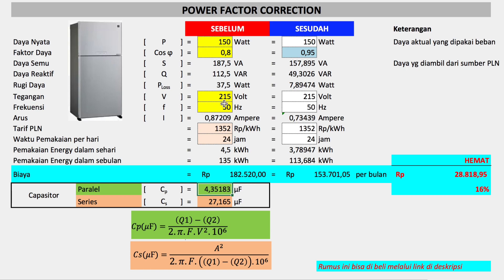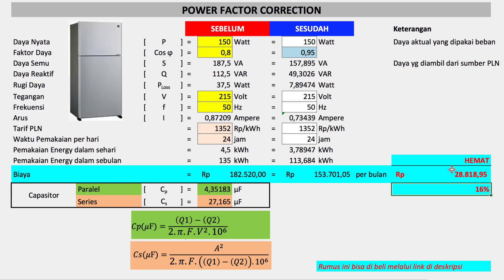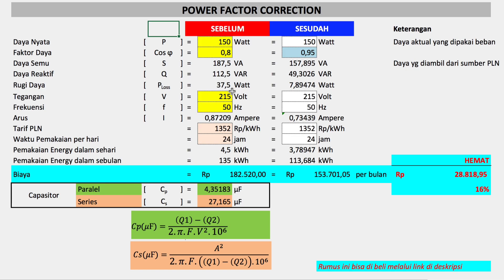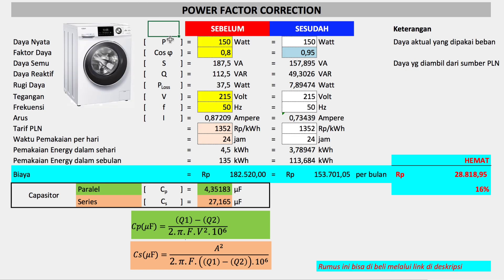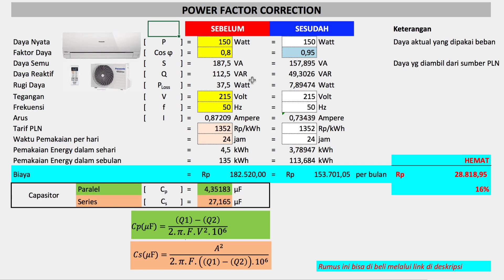Ketika kulkas ini sudah ditambahkan 4 mikrofarad, maka akan kita dapatkan perhitungan biaya kelistrikannya, penghematannya sebesar 28 ribu dalam sebulan, atau sebesar 16%. Ini hanya untuk satu alat saja, untuk alat rumah tangga satu kulkas per bulan. Belum nanti misalkan mesin cuci, kipas angin, pompa air, dan lain-lain, yang tentunya terkait dengan beban induksi, penghematannya pasti secara total akan jauh lebih besar.